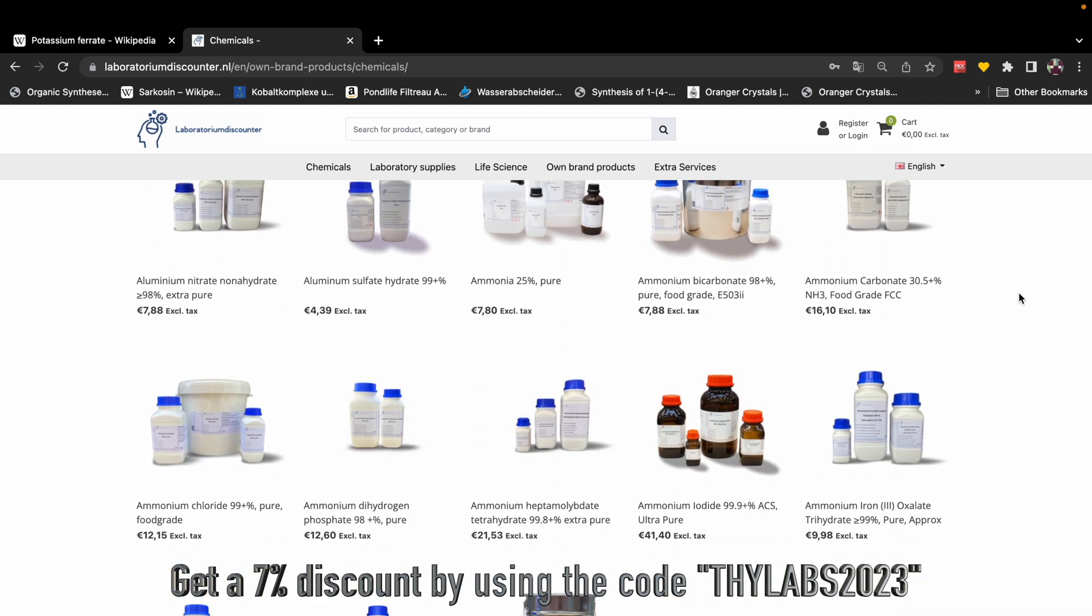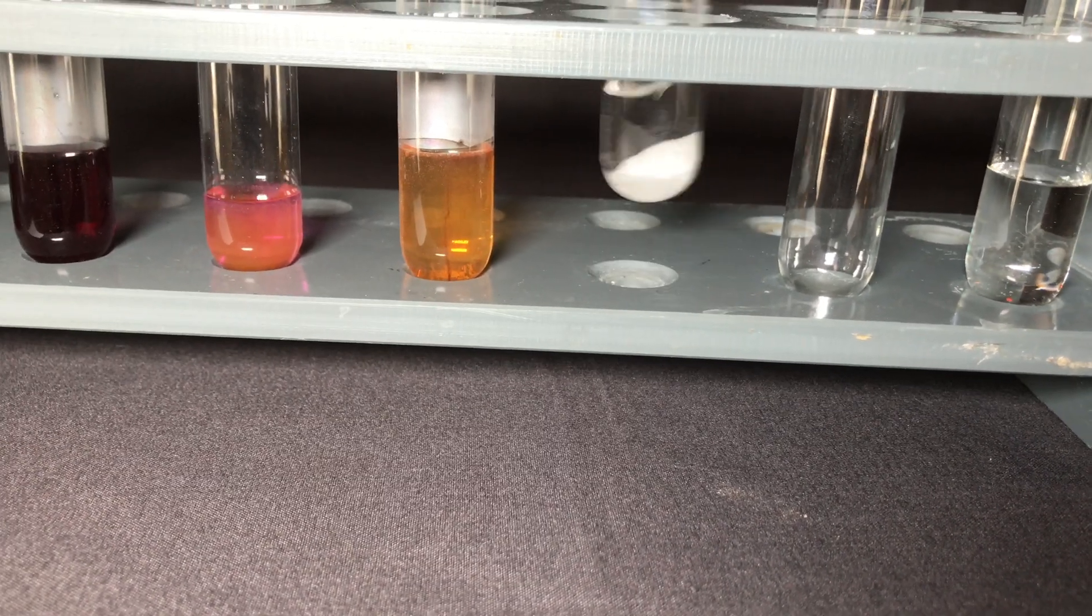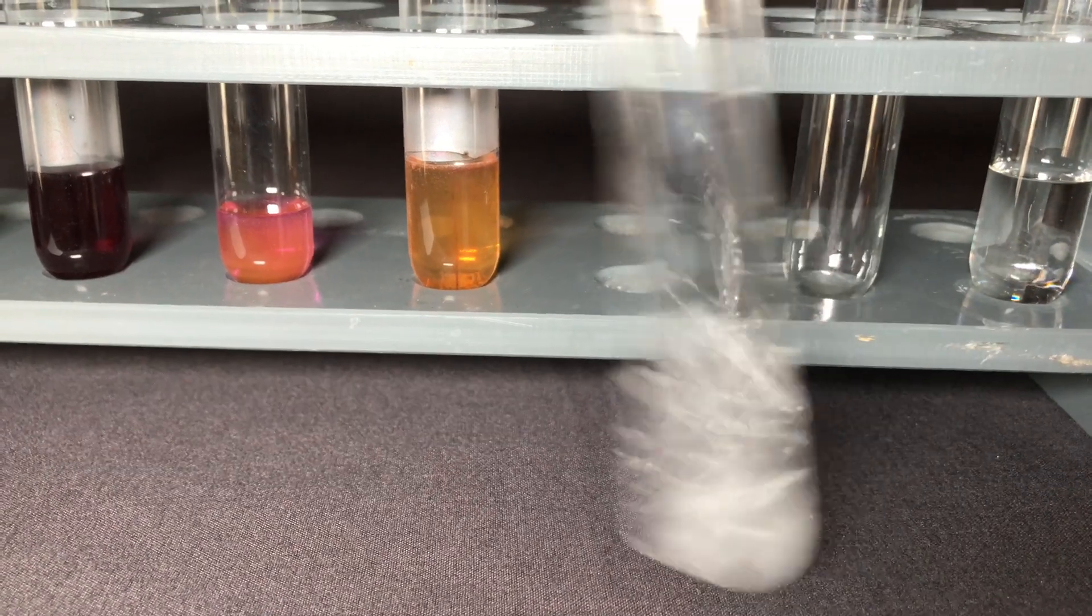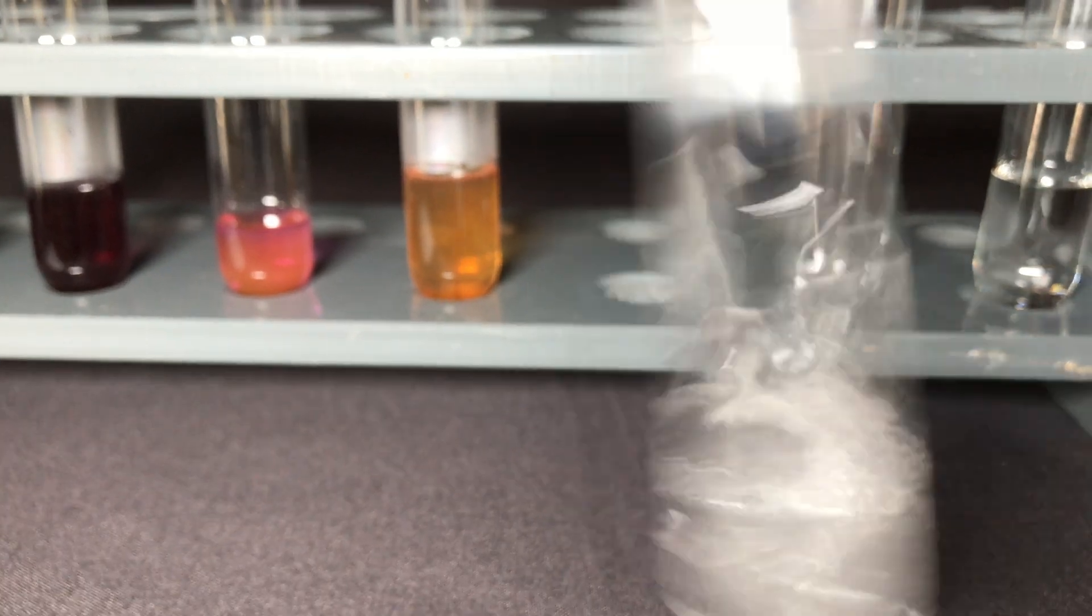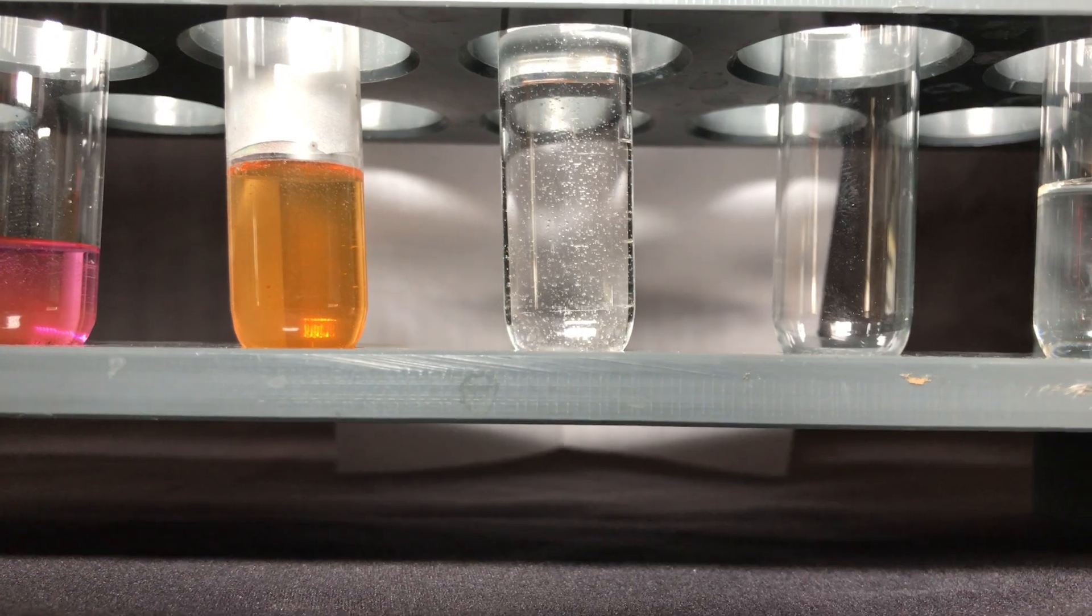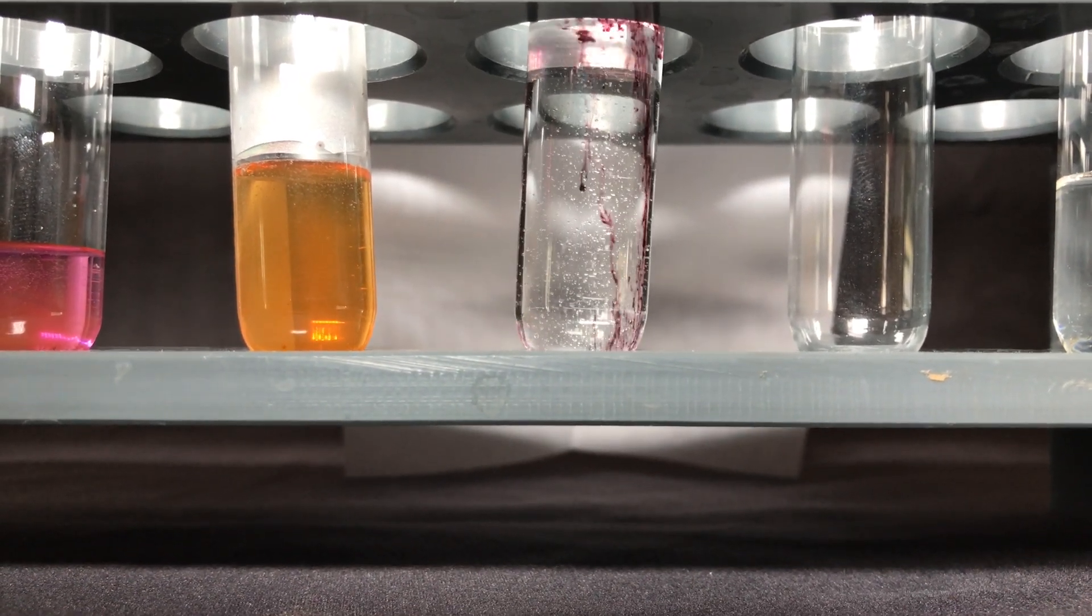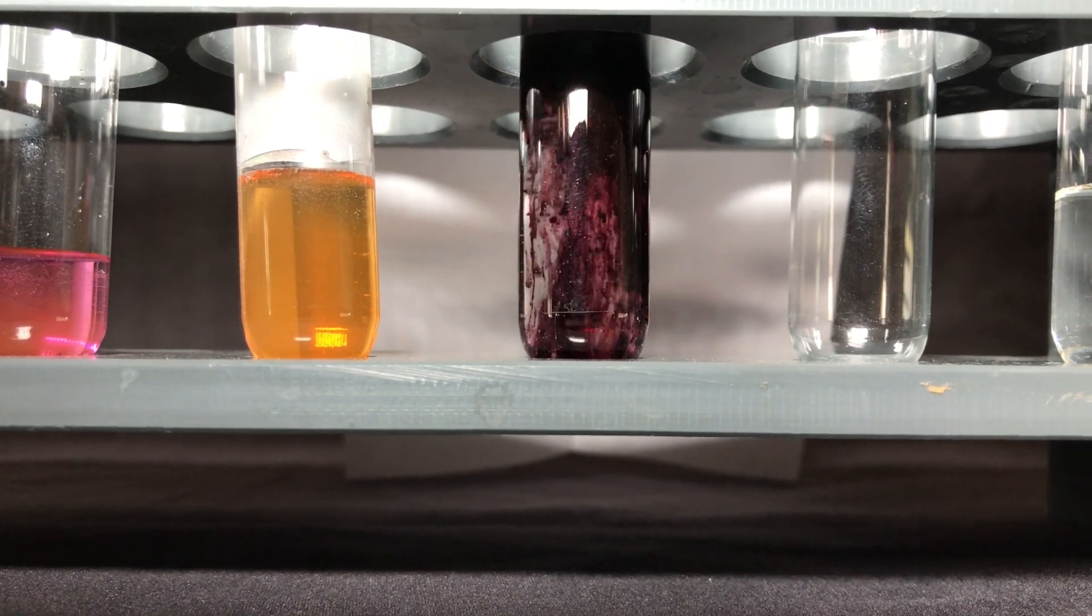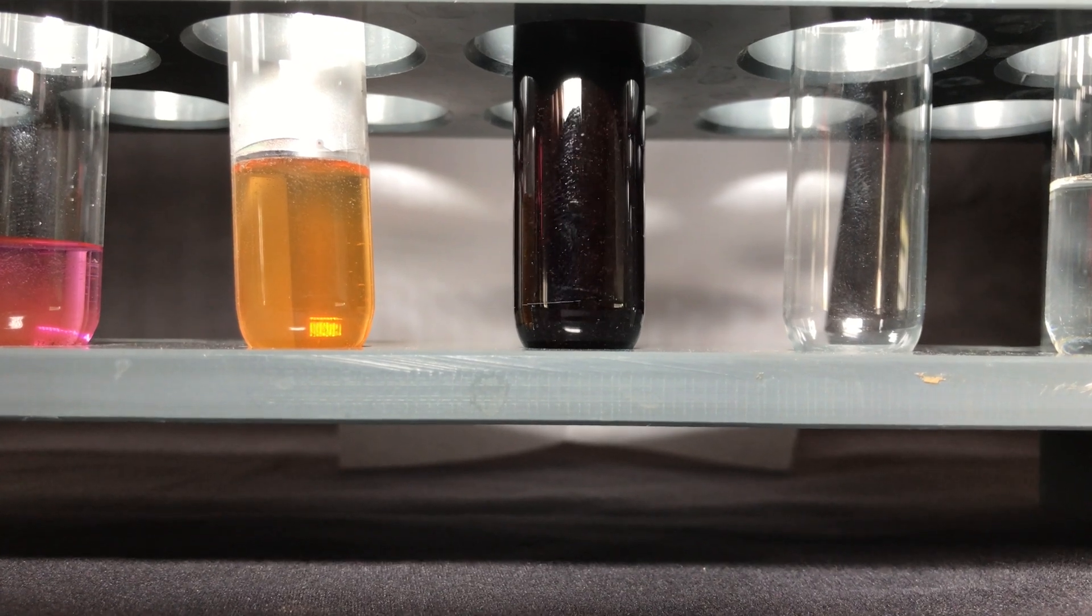You can even get a 7% discount with the code on screen or in the description. Primary alcohols are oxidized to carboxylic acids by using potassium ferrate. And as potassium ferrate is not stable in water, I again prepared an alkaline solution of potassium ferrate. Before adding the ferrate I added 2 drops of benzyl alcohol. Before adding the ferrate I smelled the solution and it smelled like benzyl alcohol. Immediately after adding it I smelled it again and it smelled much stronger, maybe benzaldehyde. I then let it sit for a minute and shook the test tube.